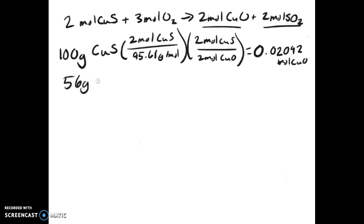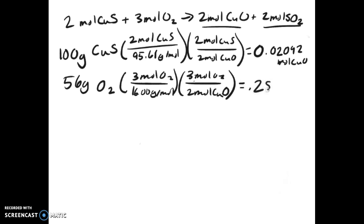But let's do the 56 grams of O2, which if you have 3 moles of O2, that's 16.0 grams per mole times the mole ratio for this one, which would be 3 moles of O2 for 2 moles of copper oxide, which will give you back 0.2813 moles of the copper oxide.